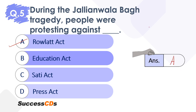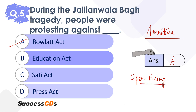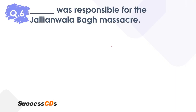The Jallianwala Bagh tragedy took place in the state of Amritsar. Open firing was carried out on Indians by the Britishers. General Dyer was one important person who was part of this tragedy and who gave way to it. It was a very huge massacre — many people lost their lives. Some people even jumped into wells in order to save themselves. Protests against the Rowlatt Act were going on that day, on the occasion of Baisakhi. This is basically the story of the Jallianwala Bagh tragedy.